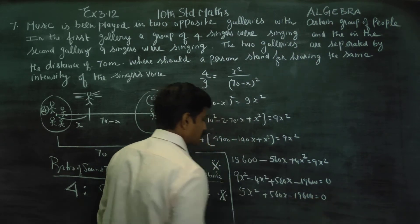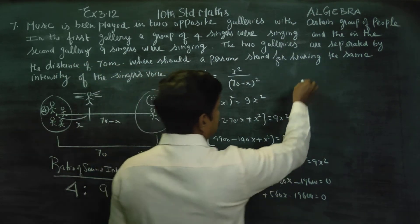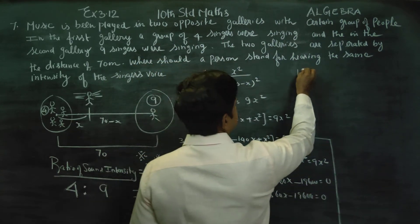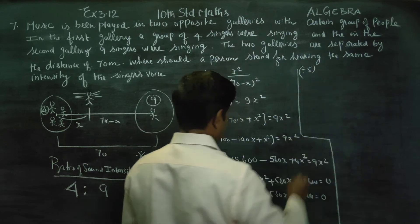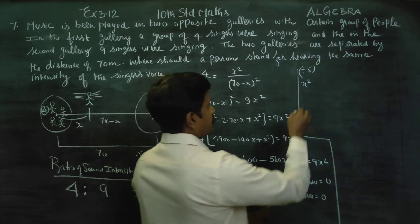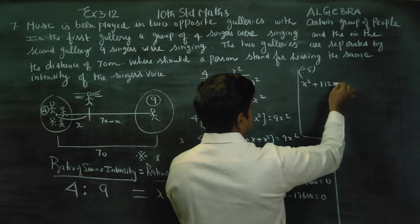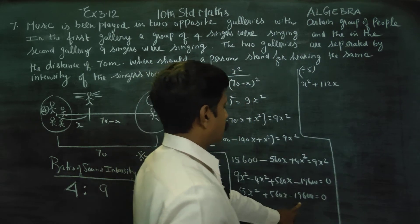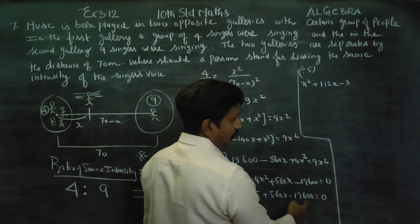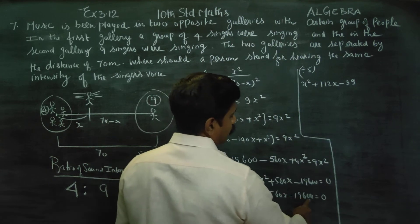Dividing fully by 5: x squared plus 112x minus 1920 equals 0.